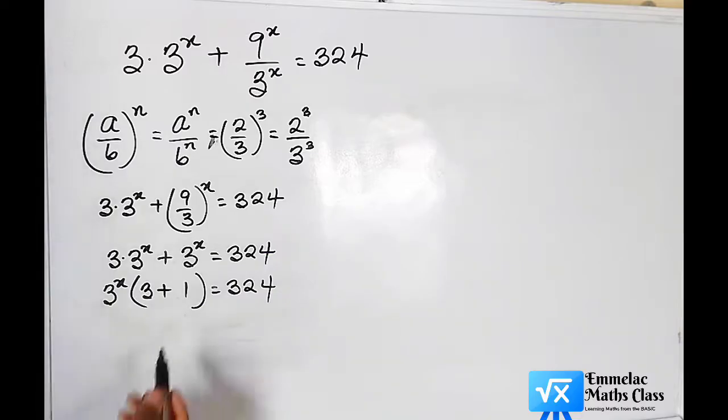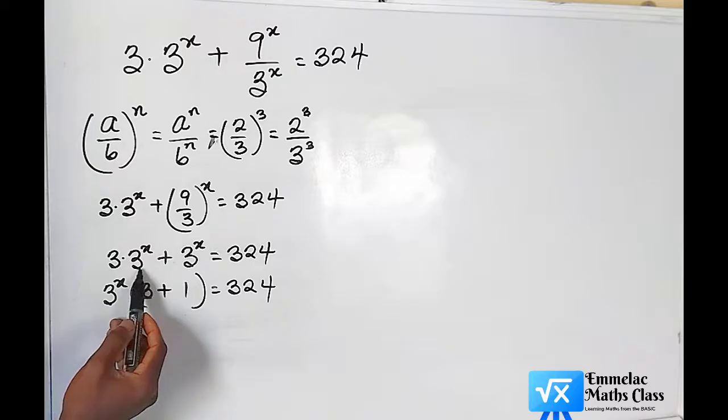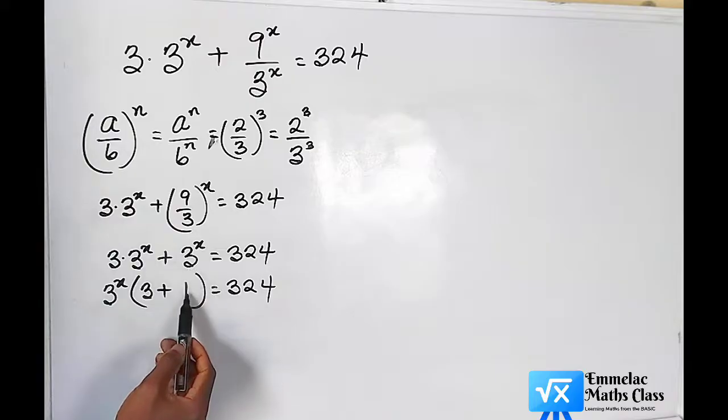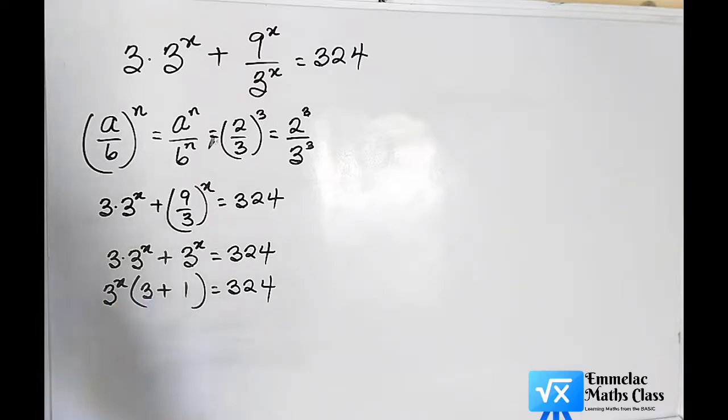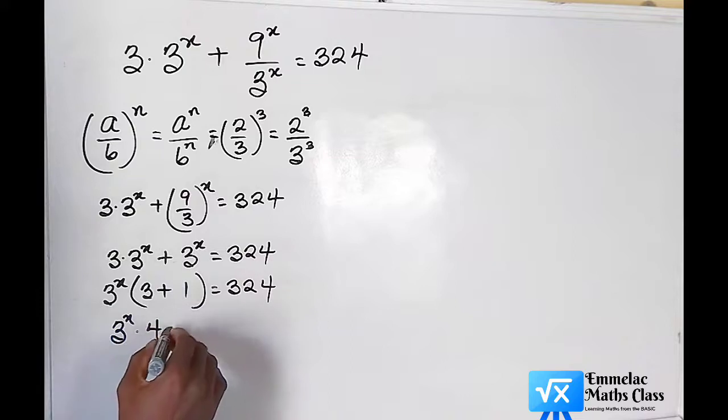When you bring out this 3 raised to the power of x, here it will remain 1. So 3 plus 1 will give us 4. 3 raised to x times 4 equals 324.